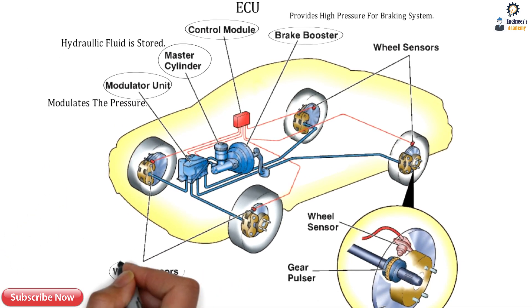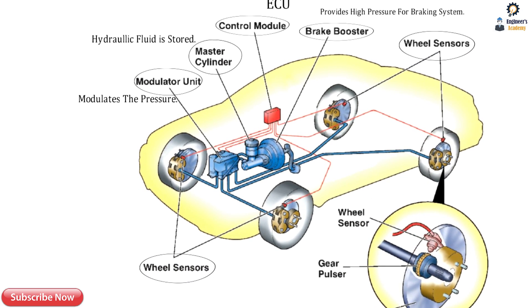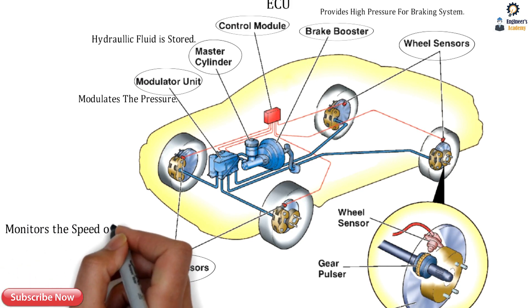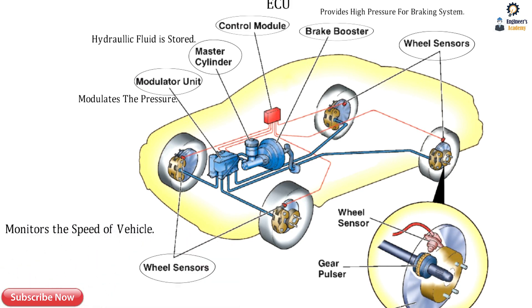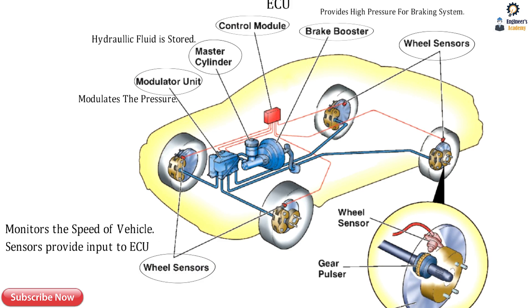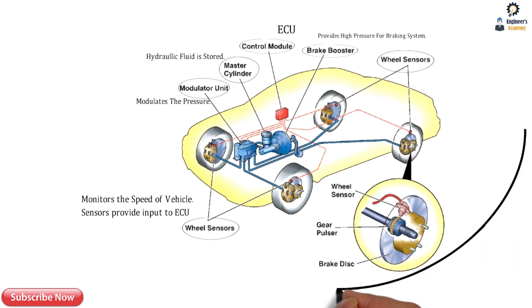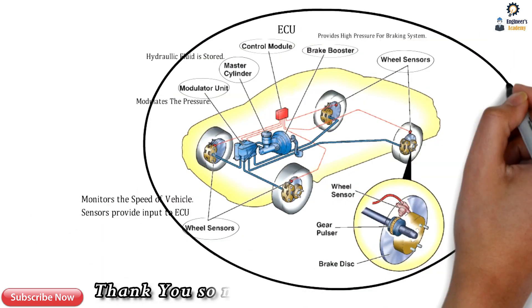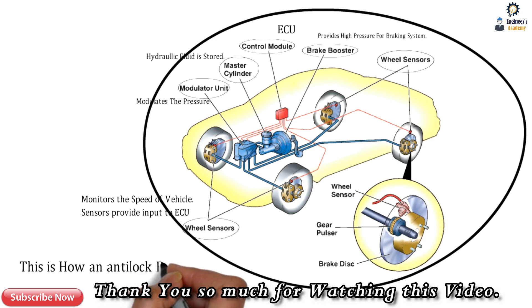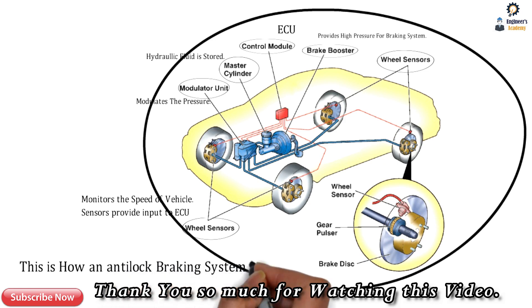In the front and rear wheels there are wheel sensors, which monitor the vehicle's overall speed or maximum speed and send signals to the Electronic Control Unit, providing input to the ECU. These are all the components of ABS — the anti-lock braking system — and this is how an anti-lock braking system works.